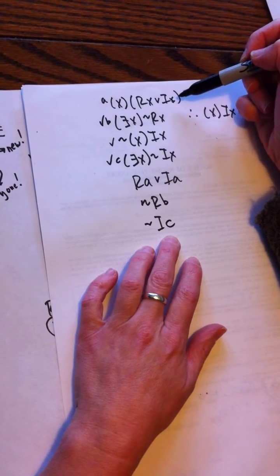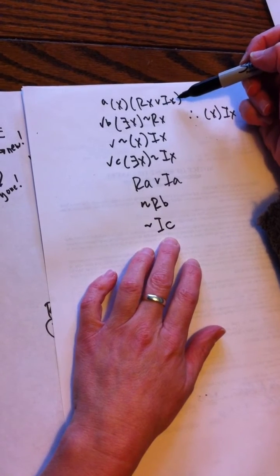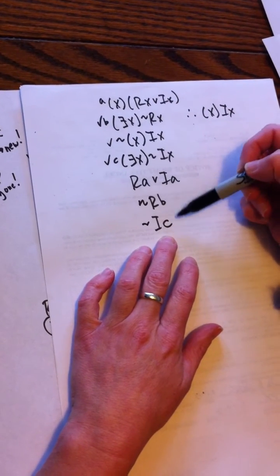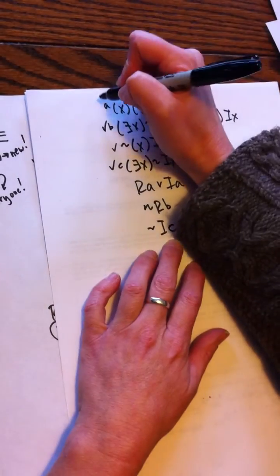This universal has to be instantiated with every constant that shows up in your proof at any time. And I've just introduced a b and a c, so now I got to come back up here and I've got to do it with a b and a c as well.